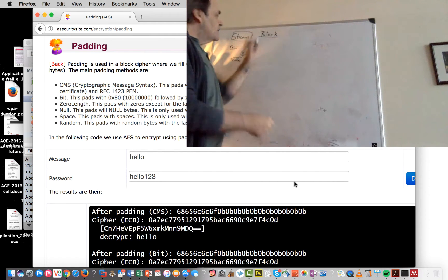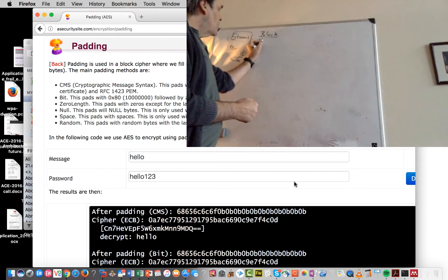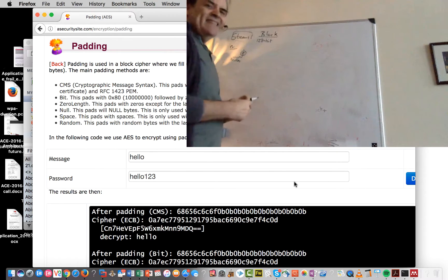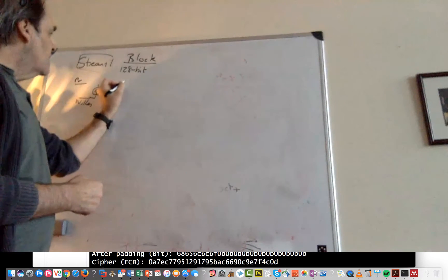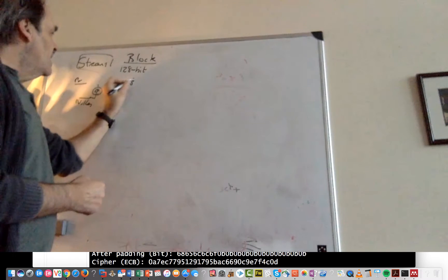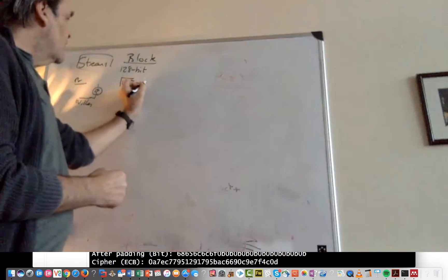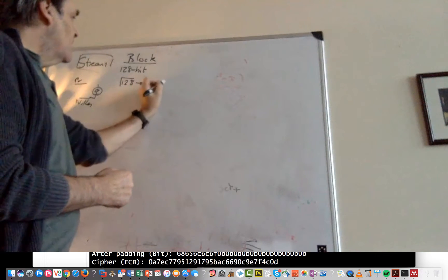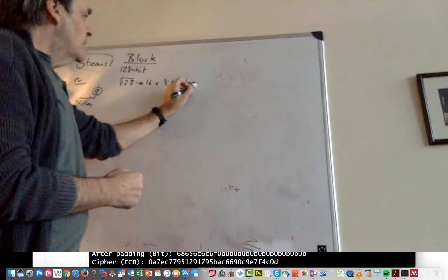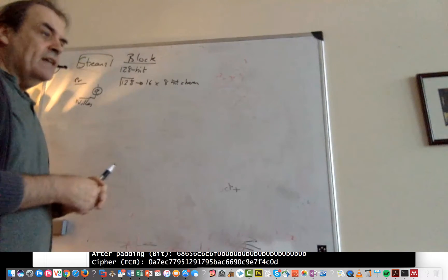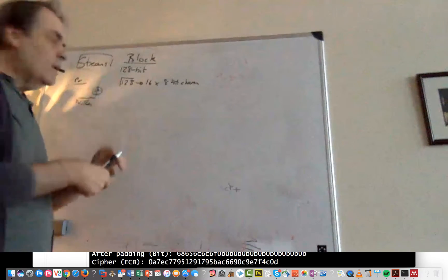But most of the ciphers that we actually use, use block encryption. So a typical block size is 128 bits, and if we look at that, 128 bits make up 16 8-bit characters.